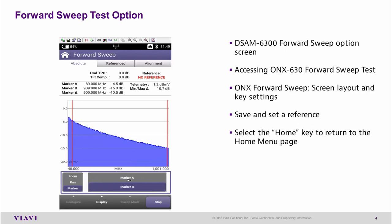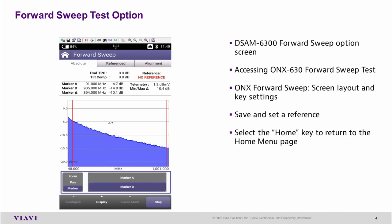The first thing we might want to do is set up our markers. Let's set marker A — you'll be able to see the frequency change — let's set it to 91 MHz. We'll now select marker B and set that to 985 MHz. So we've now set our markers A and B. Up here you can see confirmation of those frequencies, the levels, and the delta or difference between the two.